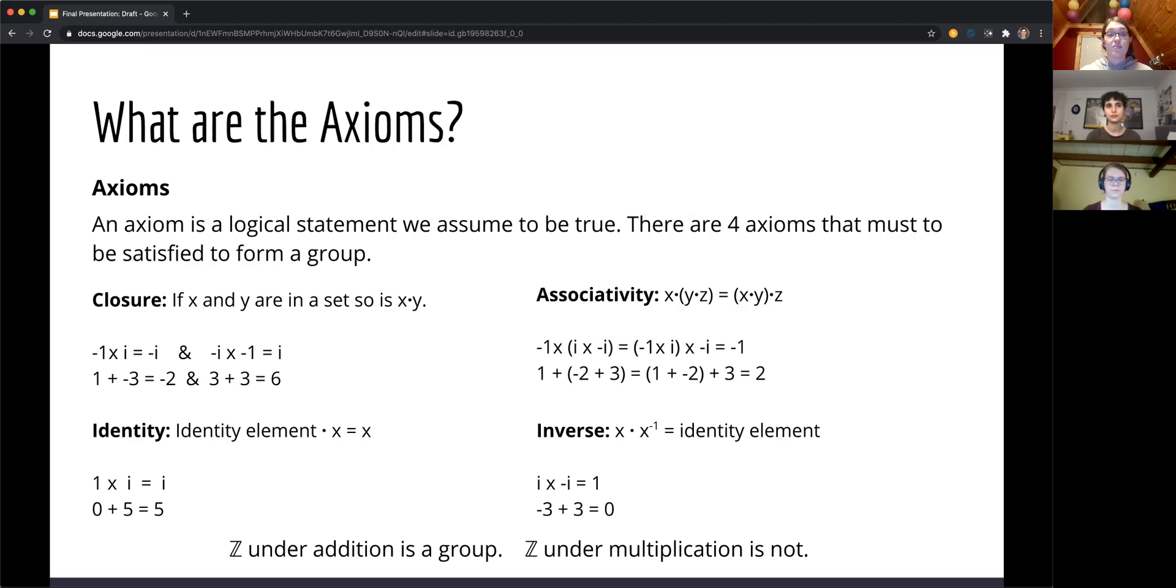Closure is the axiom that states that if there are two items in a set, the binary operation between those two items is also in the set. For example, i and negative 1 combine by multiplication to form negative i, which is also in the complex numbers set.